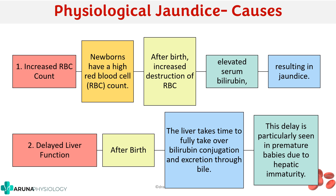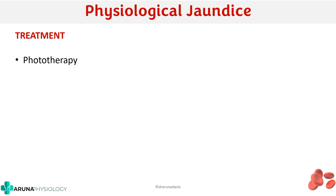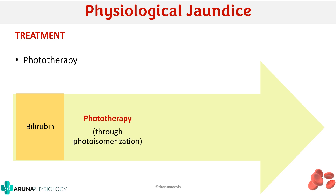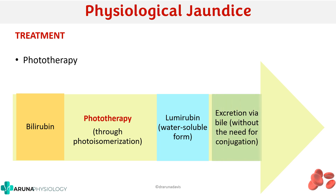Treatment is by phototherapy. When light is applied, bilirubin undergoes photoisomerization and is converted to a substance called lumirubin, which is water soluble and can thus be excreted without any need for conjugation. That is how phototherapy is used for the treatment of physiological jaundice.